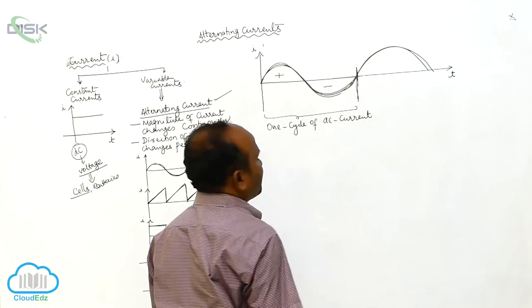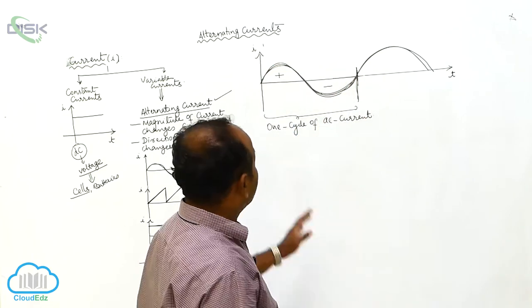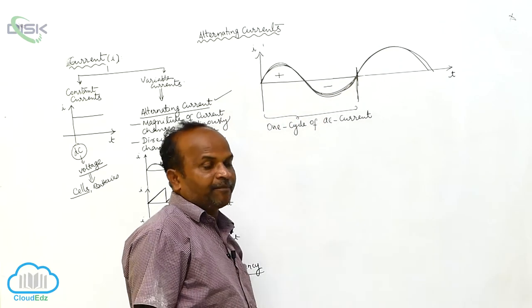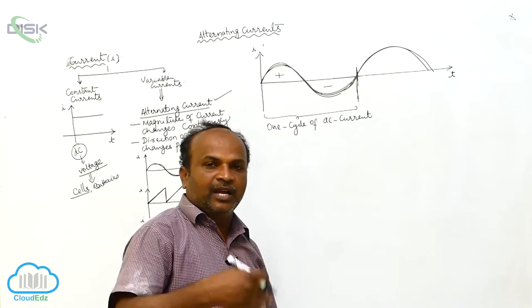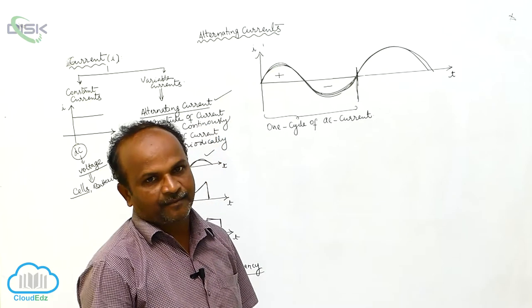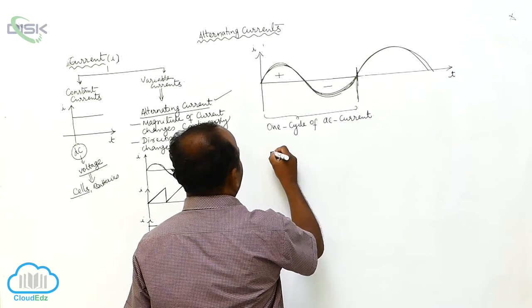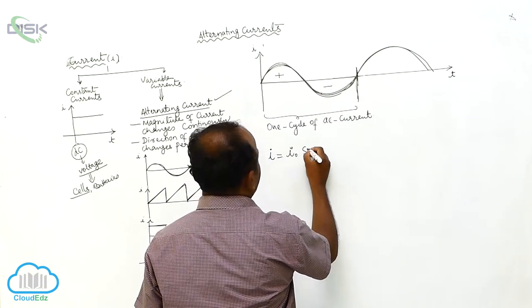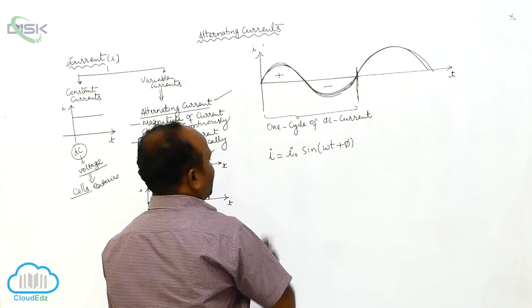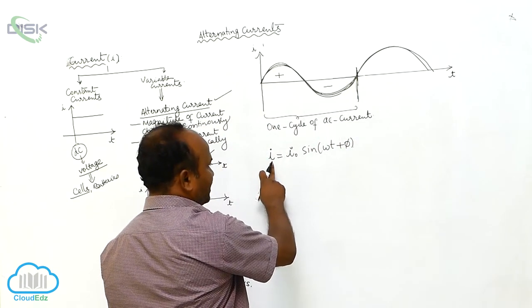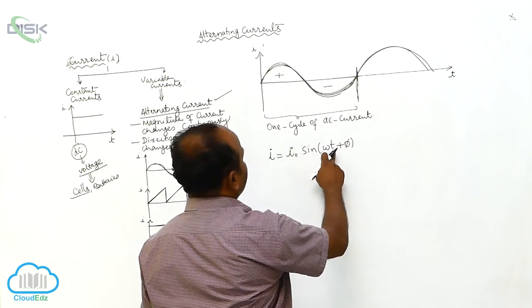One cycle of AC current means the positive half cycle followed by the negative half cycle. The variation of the current with respect to the time is sinusoidal — that is, similar to the sine function. Therefore this can be represented by I = I₀ sin(ωt + φ), where I is the instantaneous current and I₀ is the maximum or peak current.